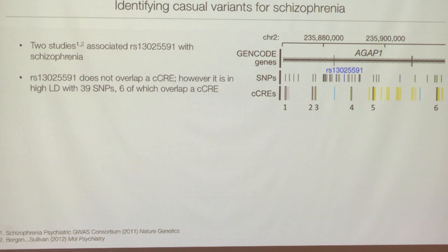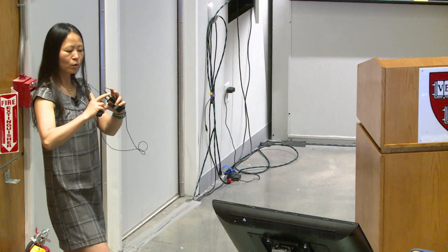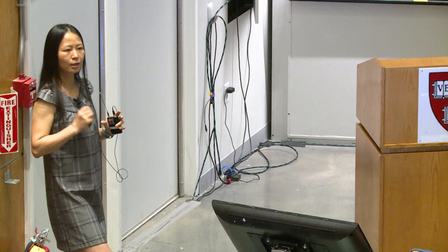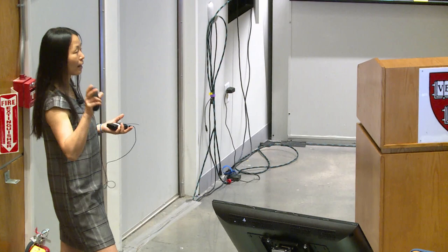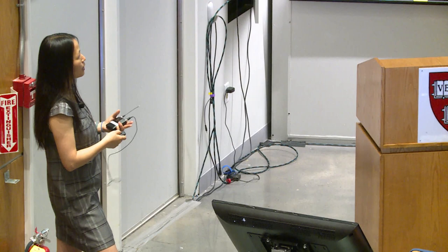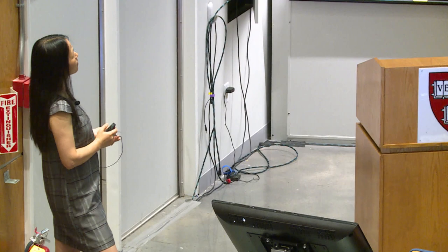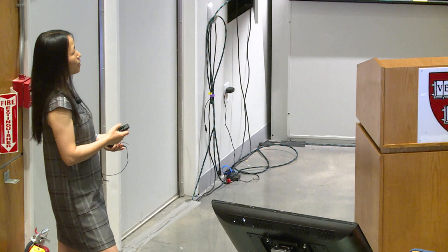However, instead of the CCRE itself, we use linkage disequilibrium — regions where chromosomes like to stick together and pass on to next generations in high frequency. Looking at the region in linkage disequilibrium with this SNP, there are six CCREs in LD with it. Only one of those CCREs is actually active in human brain, which is relevant since schizophrenia is a brain disease. That's when the power of our resource comes in — narrowing down to which regulatory element is functionally relevant in the tissue of interest.